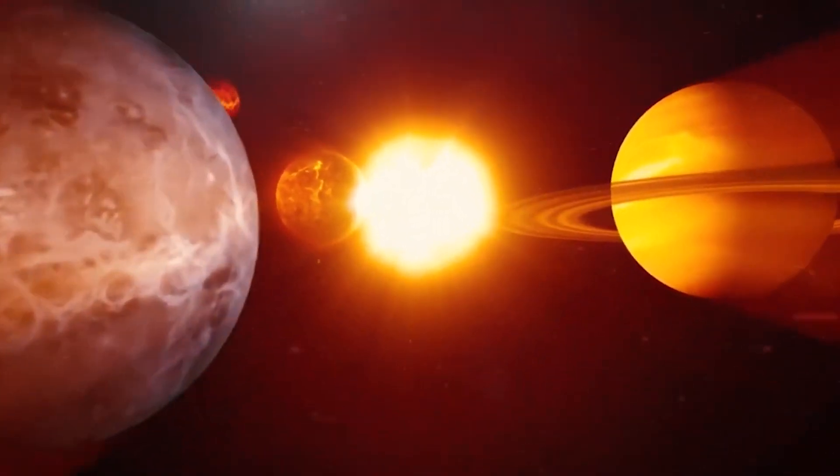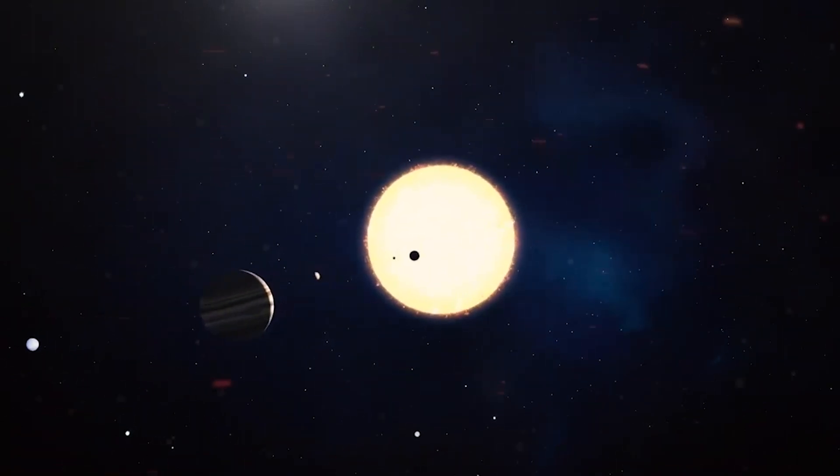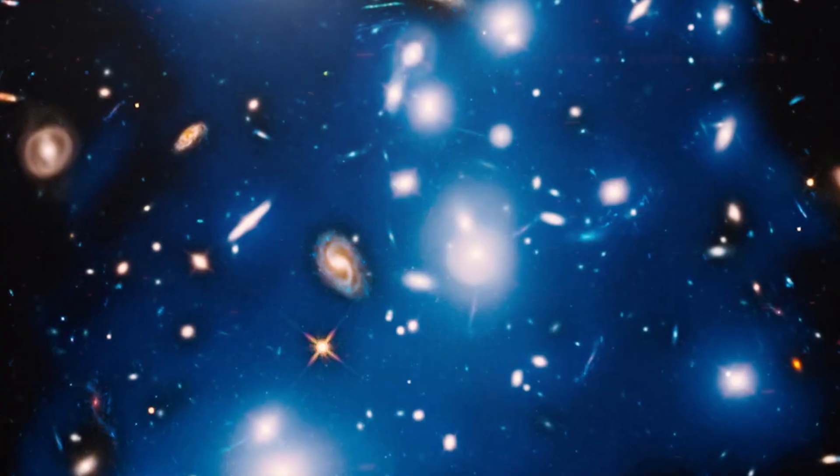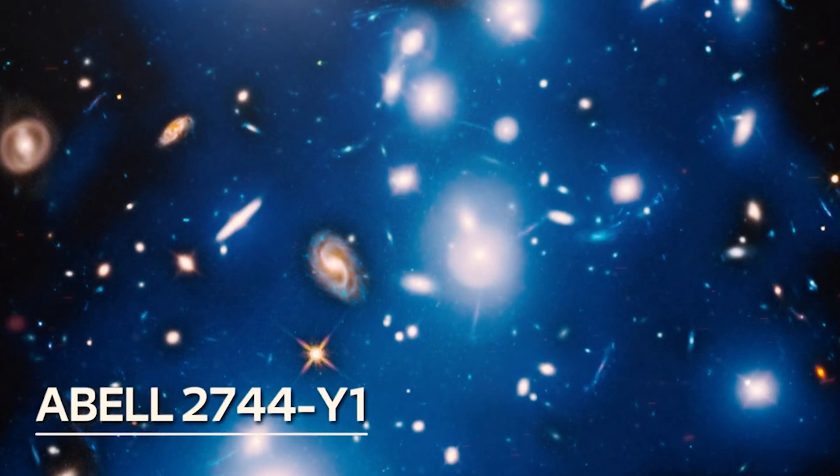Cosmologists suggest that to better understand the universe, one must consider that what we observe is only a small part of a larger reality. Finding galaxies like Abel 2744Y1, which lies at the farthest edge of the universe, can help us better understand this reality.